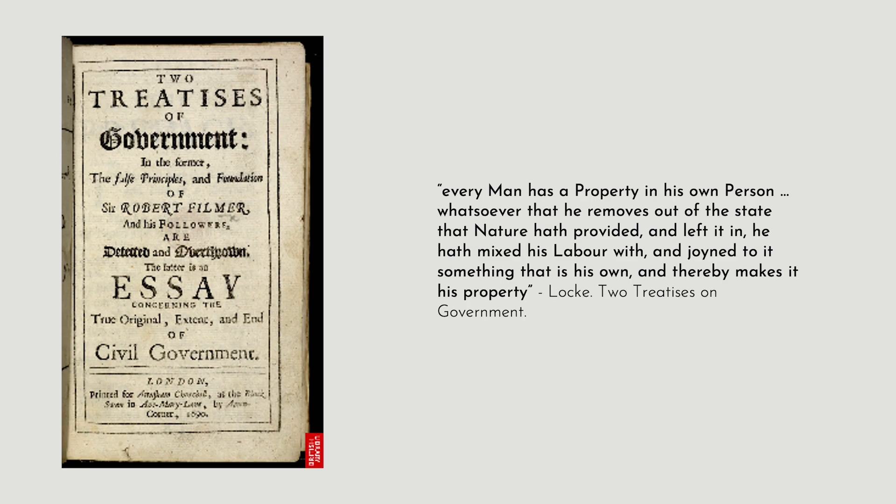As a consequence, Locke wrote, and again quote from him, whatsoever that he removes out of the state that nature hath provided and left it in, he hath mixed his labour with and joined to it something that is his own, and thereby makes it his property. The exercise of this right to private property was constrained only by what was due to others. Now Locke was writing at a time of extensive reorganisation of property and customary rights to use land in England and elsewhere. A process of enclosure through fencing off of land was removing these customary rights and creating a new kind of rural poor.